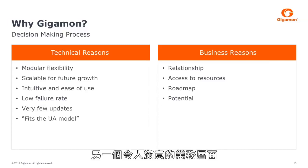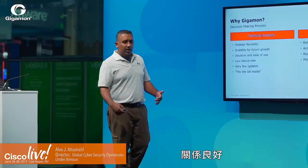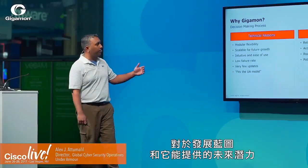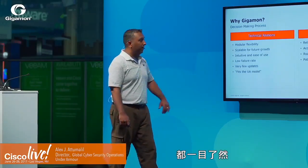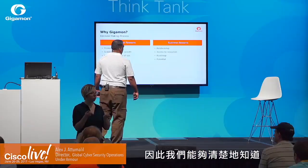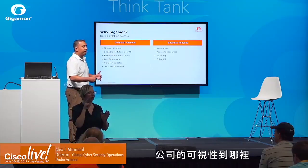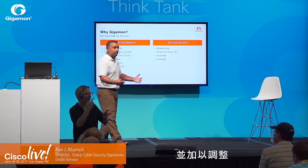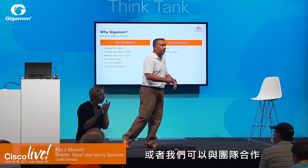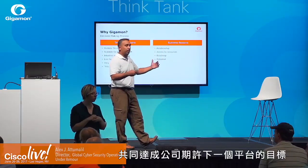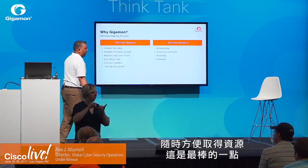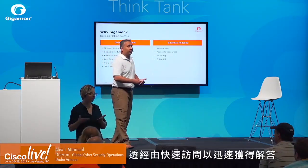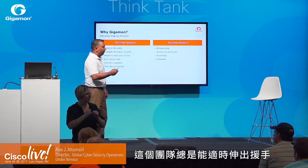The business relationship was also a key factor. They have an excellent relationship with the Gigamon sales team and leadership. They have good visibility into the roadmap and future potential of the platform, and were able to walk the Gigamon team through where they wanted the next platform to go. Ready access to resources was the best part — if they needed to make a quick call with a question, the team was always available to help.